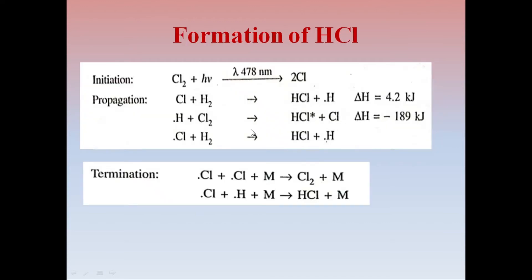Next is the formation of HCl. This is a photodissociation reaction because the reaction involves initiation by photodissociation of chlorine. In initiation process, chlorine absorbs radiation of wavelength 478 nanometer and forms two chlorine free radicals.